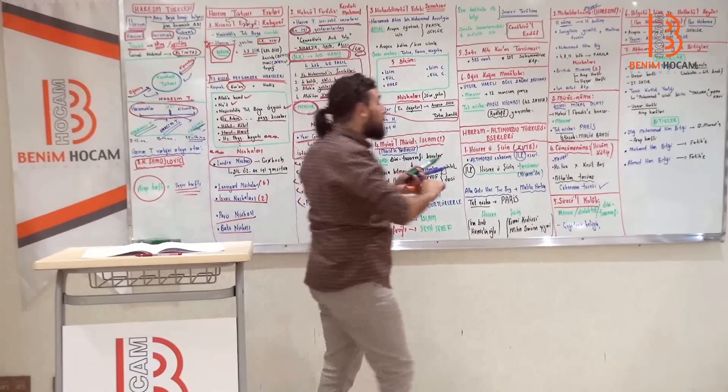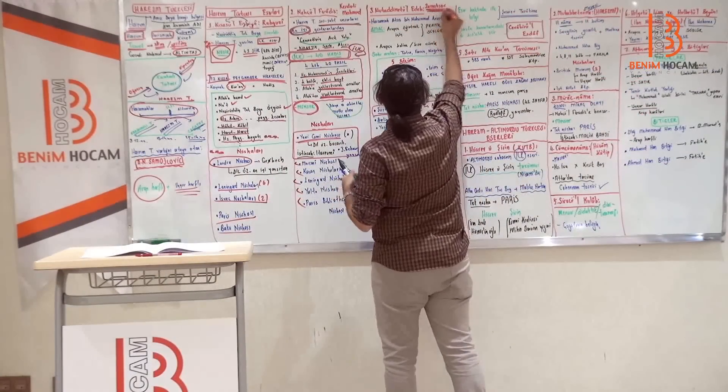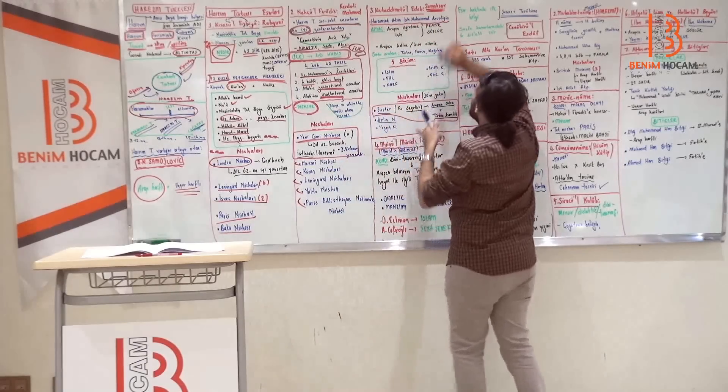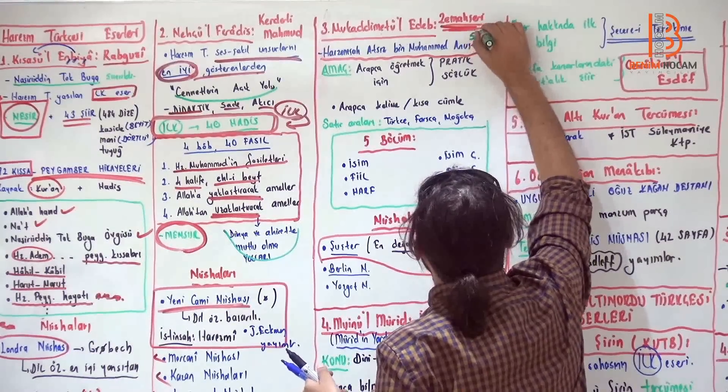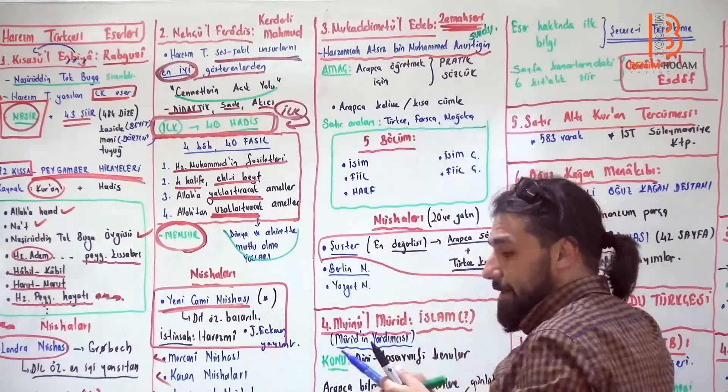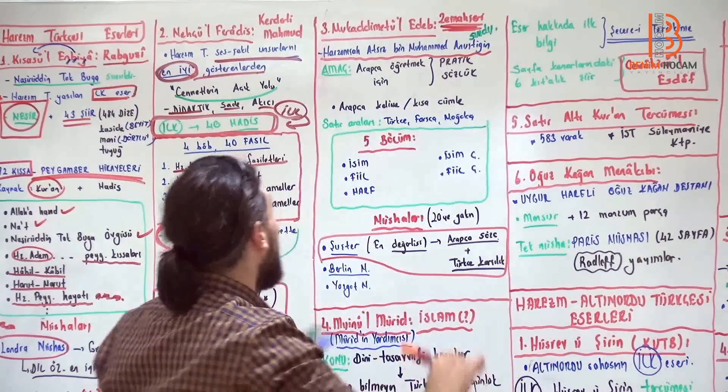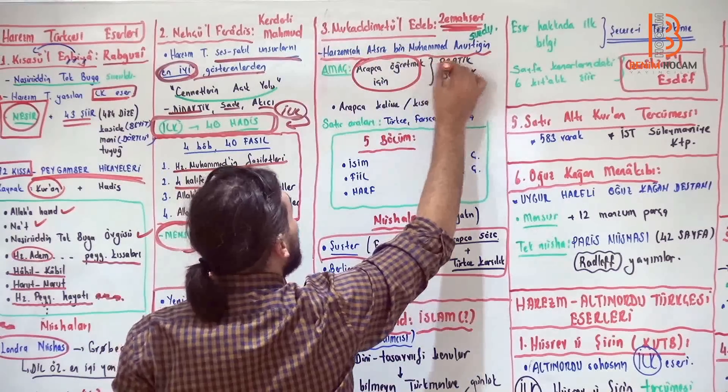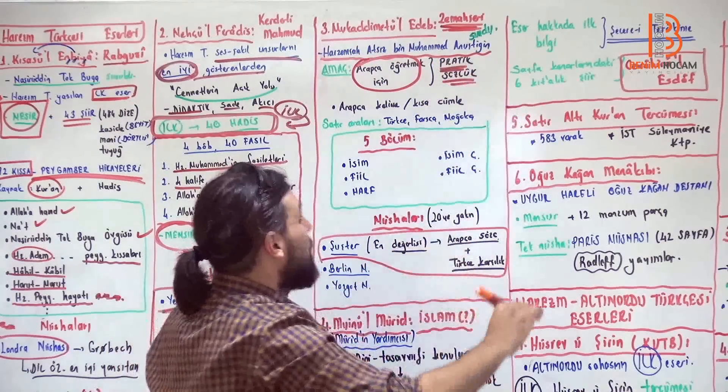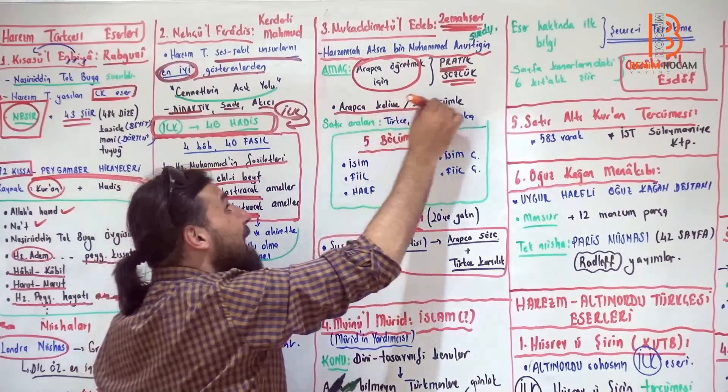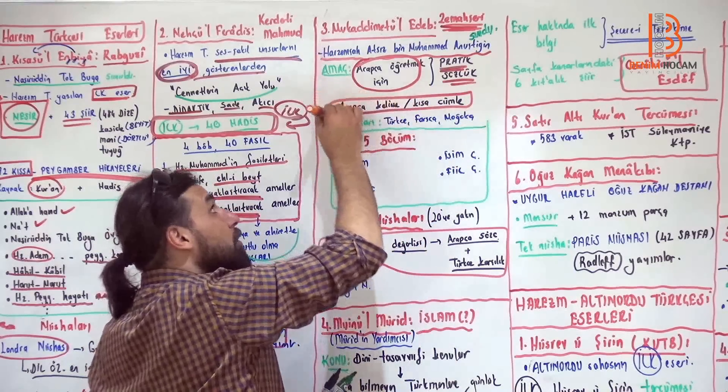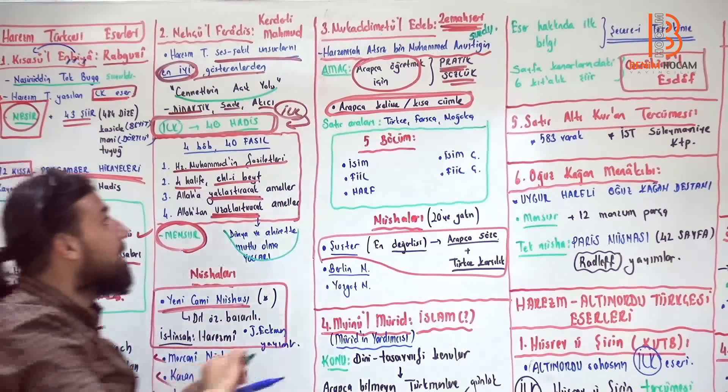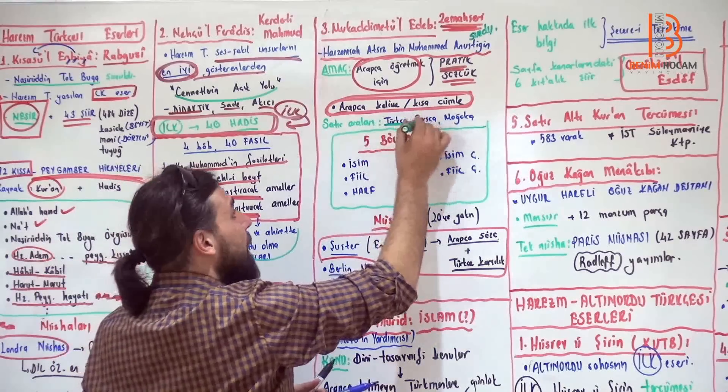Ve arkadaşlar bu eseri Kerderli Mahmut bin Ali yazmıştır. Ve bu eser mensurdur. Bize dünya ve ahirette mutluluğu verir. Yeni cami nüshasını önemlidir. Cennetlerin açık yolu olarak bilinir. Türk Edebiyatı'nın ilk kırk hadisidir. Geldik, Mukattübetül Edep. Zemahşeri'nin yazdığı, Harzemşah Atsız Bin Anuş Tigin'e arkadaşlar sunduğu eserdir. Bir sözlüktür. Arapça öğretmek için yazılan pratik bir sözlüktür. Arapça kelimeler ve kısa cümleler verilir. Çünkü karşında Arapça bilmeyen bir adama yazıyorsun. Ve kelimeler kısa cümleler verilir. Satır aralarında da Türkçe, Farsça ve Moğolca sözcükler vardır.